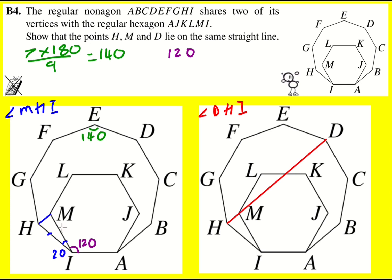Now this is an isosceles triangle which means that these two are the same. 180 minus 20 is 160 divided by 2. Each one of these is the same is equal to 80 degrees. So angle MHI equals 80 degrees. Okay nice, we just need to show that DHI is also equal to that.